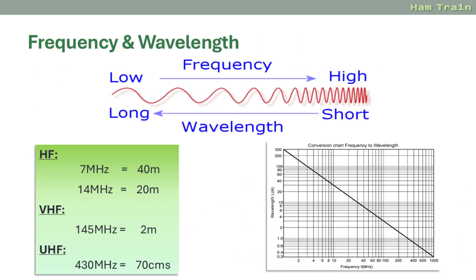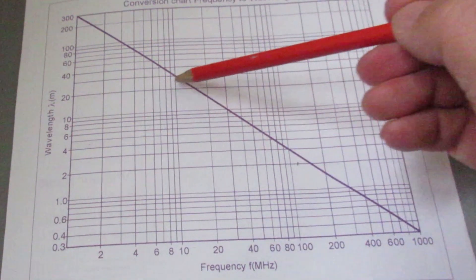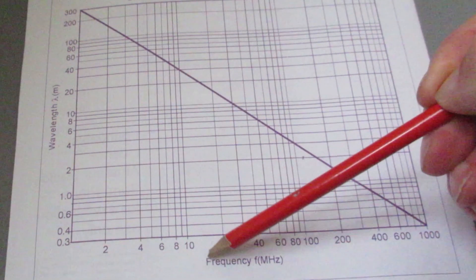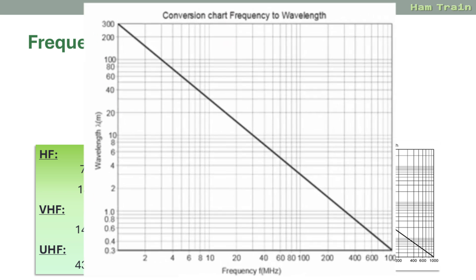For Foundation, you'll be expected to convert between frequency and wavelength. For the exam you'll be given a conversion chart. For example, taking the 20 metre band on HF: follow along from the 20 metre mark to where it meets the diagonal line, then follow the line down to find the frequency of 14 MHz. You can also try it the other way — find 144 MHz on the bottom axis, follow the line up to the diagonal, and you'll find it coincides with the 2 metre band.